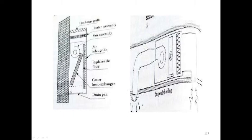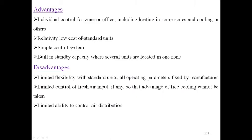The ceiling distributes cooling air so all people in the room receive cooling. Advantages of fan coil systems include: individual control for each zone or office, including heating in some zones and cooling in others; relatively low cost of standard units; simple control system; and built-in standby capacity where several units are located in one zone.